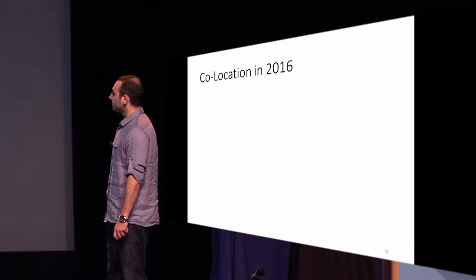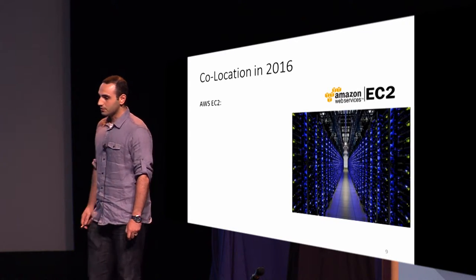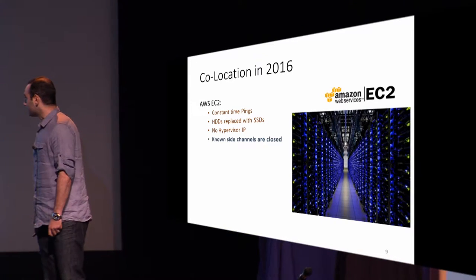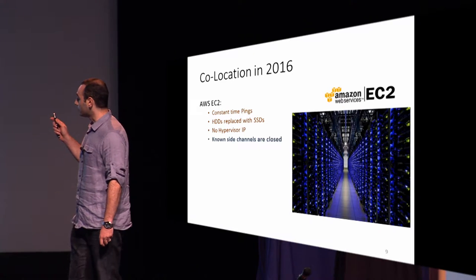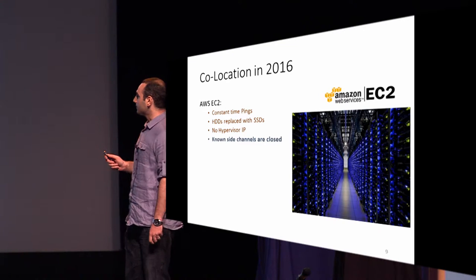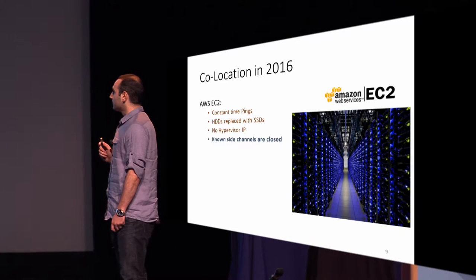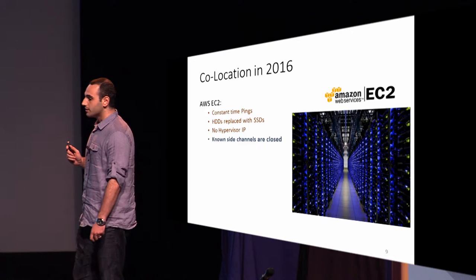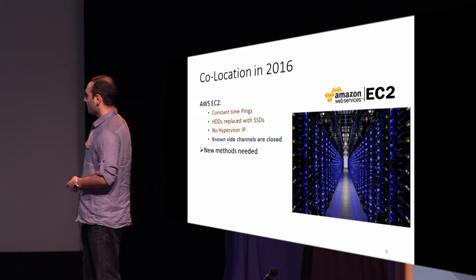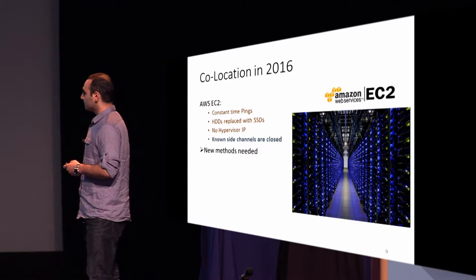In 2016, Amazon EC2 is much larger. Pings are now constant-time. Slower HDDs are replaced with high-speed SSDs provisioned so there is no bottleneck even under heavy use, and hypervisor IPs are hidden. So we can say Amazon did their homework and closed all known side-channel attacks. We therefore needed new methods and developed two co-location detection approaches.